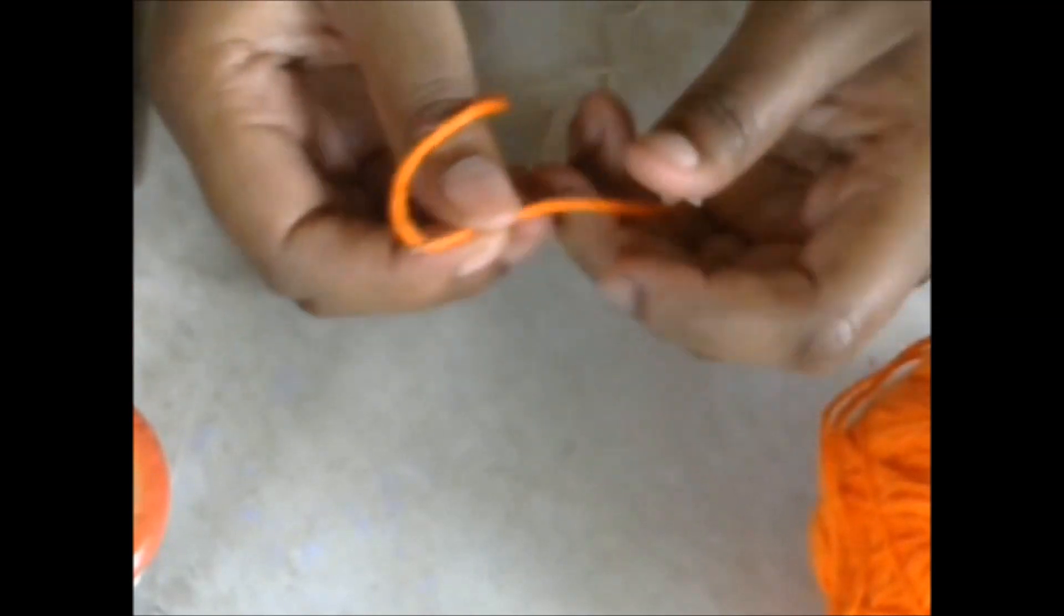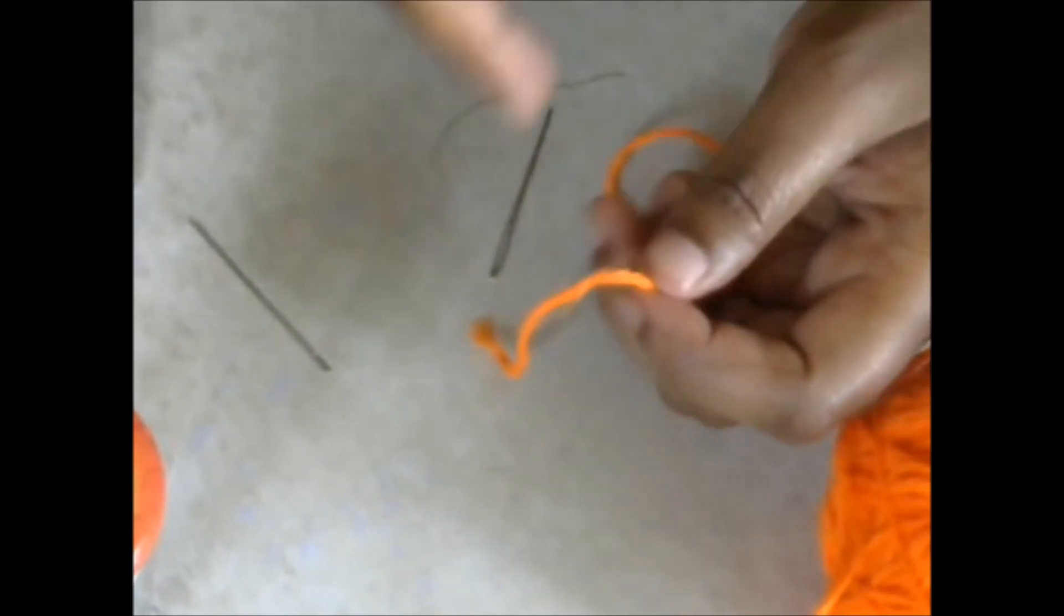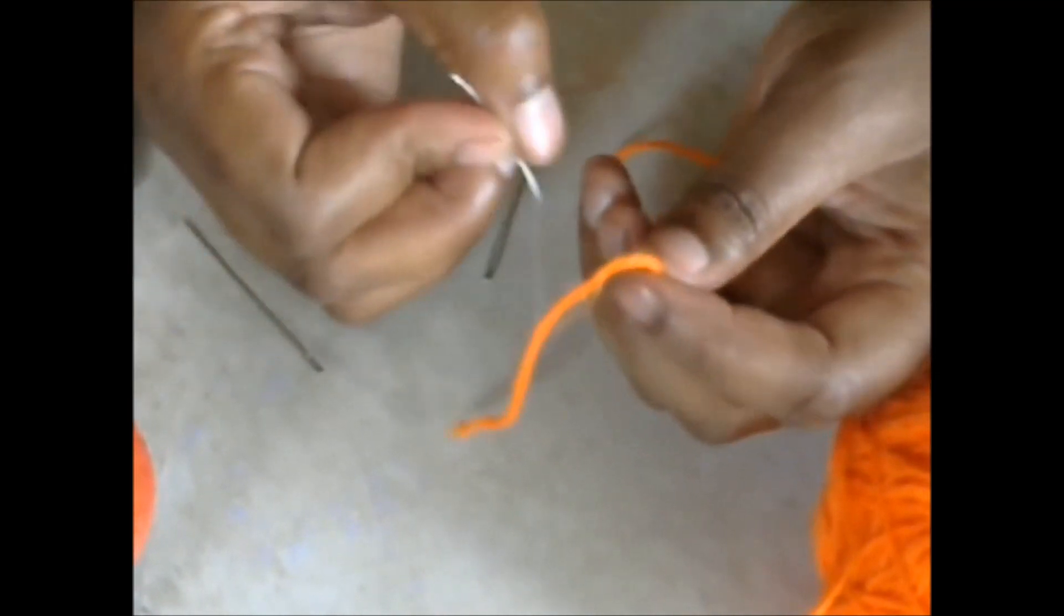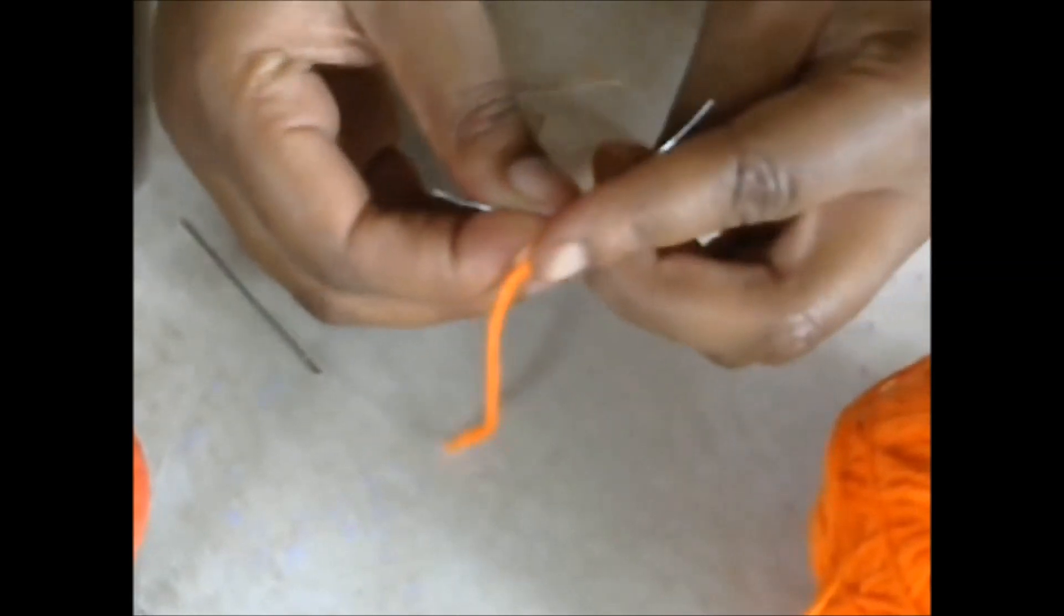And then let's say that you don't have a piece of thread. You can also use a piece of wire. This is just a really thin wire that I have for my jewelry making.